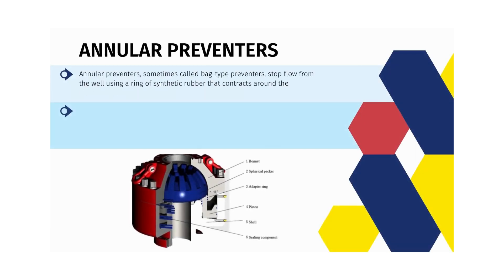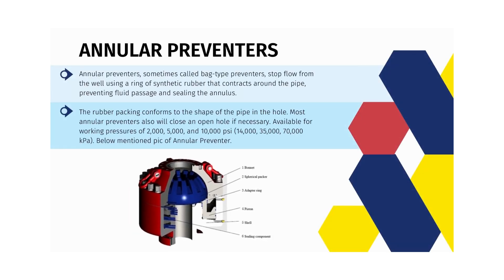Annular preventers, sometimes called bag type preventers, stop flow from the well using a ring of synthetic rubber that contracts around the pipe, preventing fluid passage and sealing the annulus. The rubber packing conforms to the shape of the pipe in the hole. Most annular preventers also will close an open hole if necessary. These are available for working pressures of 2,000, 5,000, and 10,000 psi. Here you can see a picture of an annular preventer.